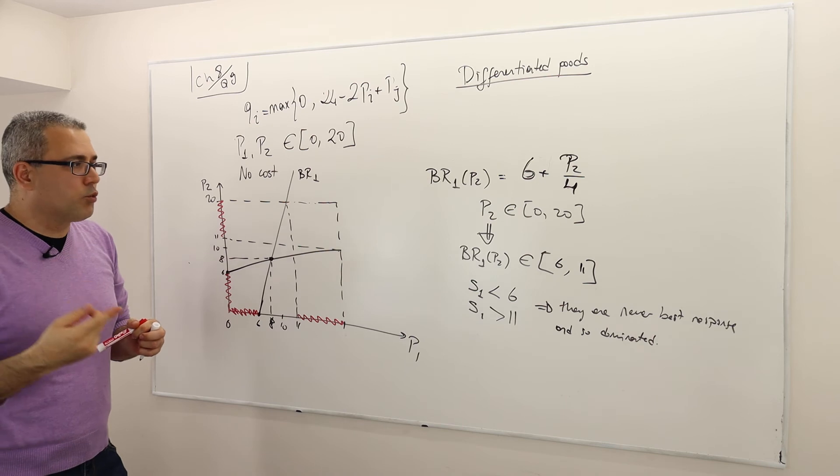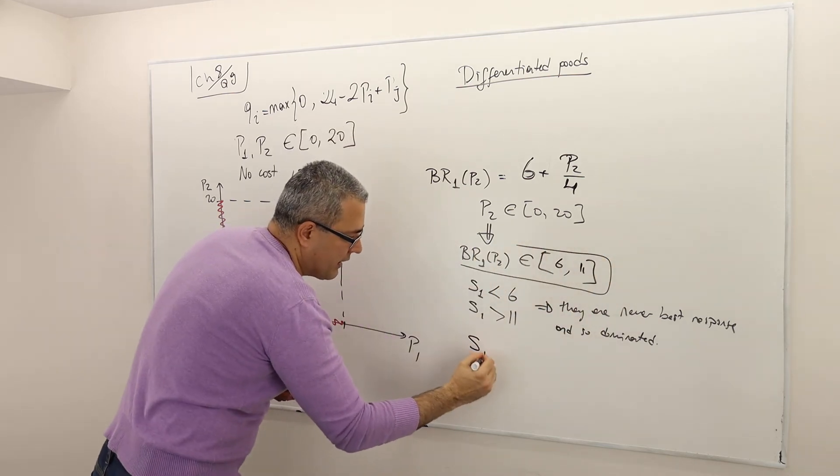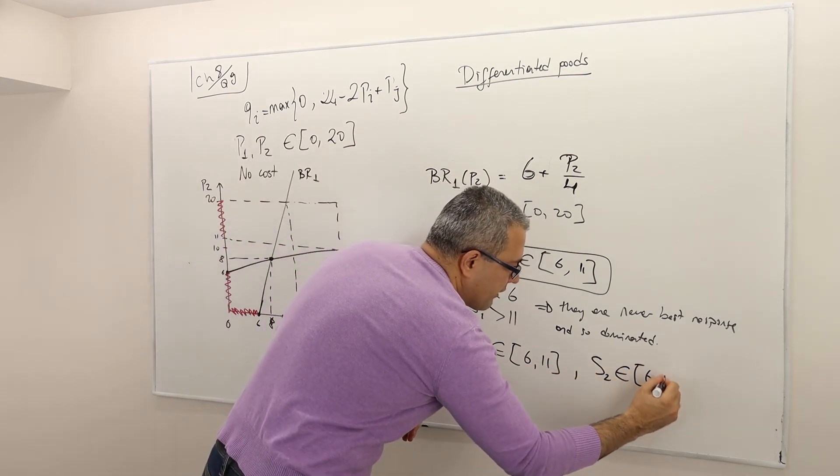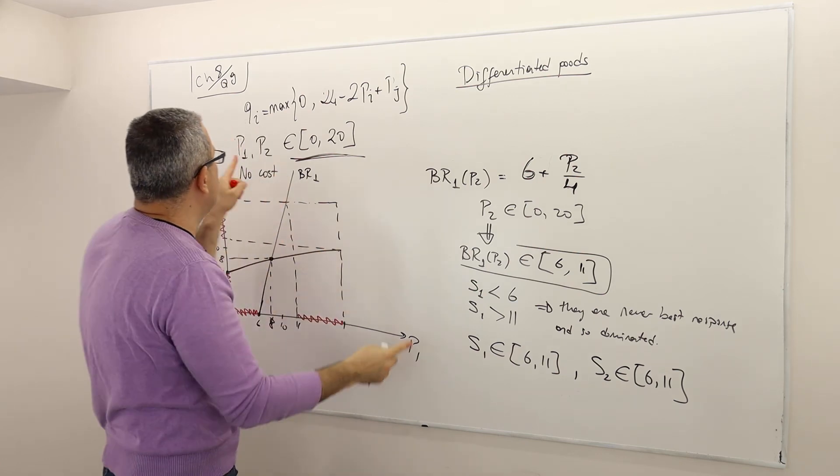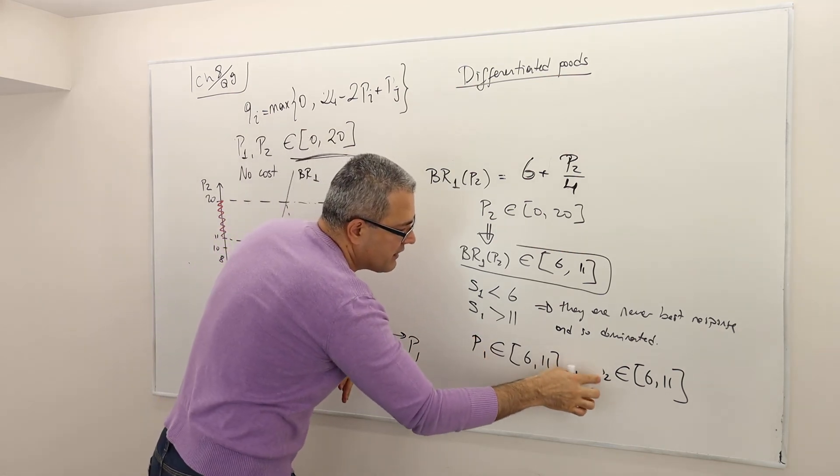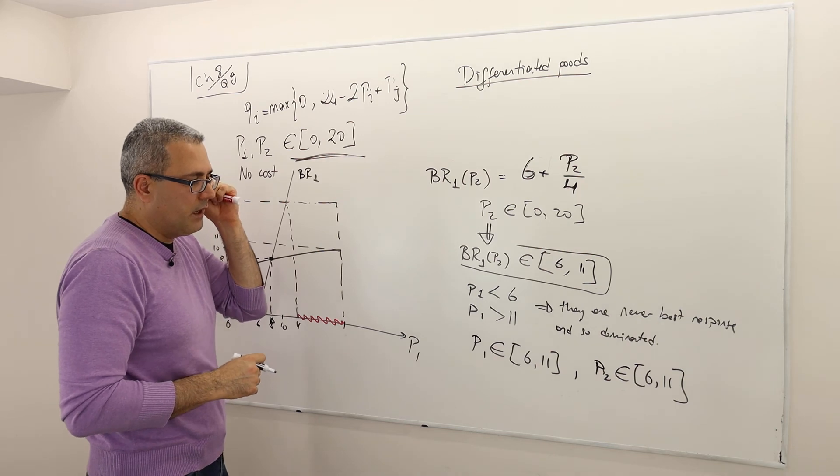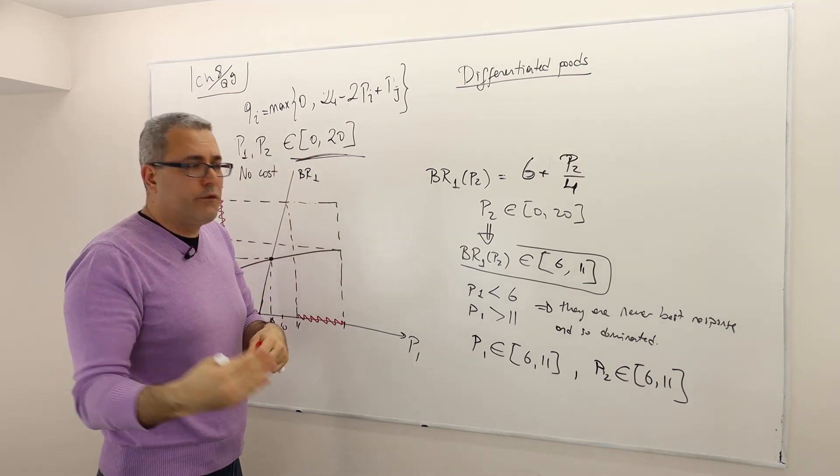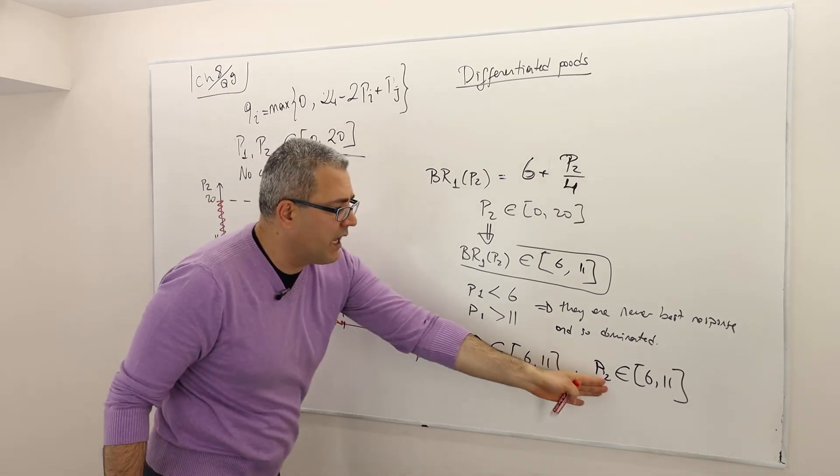So this is basically iteration number one. So in the first iteration, what do I have? The strategies for firm 1, s1, let's call it, has to be coming from this range. But the symmetric argument means s2 is also in this range. So we don't have this anymore. By the way, here, s1, s2, I mean actually p1, p2, because this is the notation we used. So I'm sorry for using different notation. Let's keep on the same notation. So p1, p1. Let's not change the notation in the middle of the solution. So, we don't have this restriction anymore. We realize that a rational firm 1 will never choose price less than 6 or price more than 11. And so the prices are actually coming in this range. Same for firm 2.